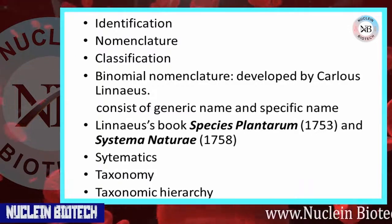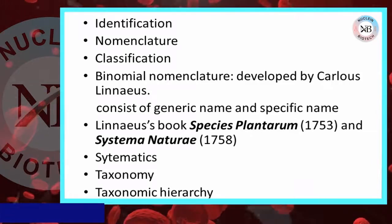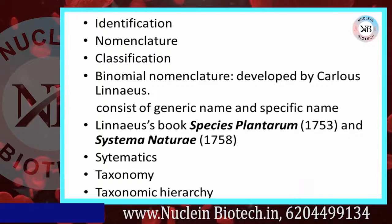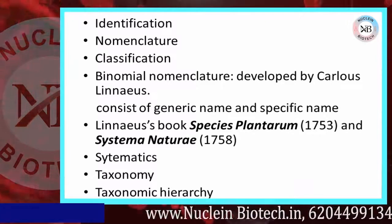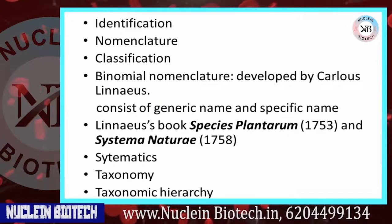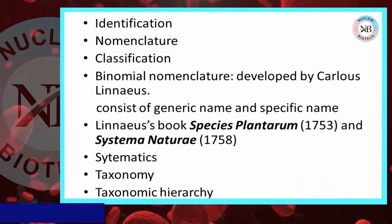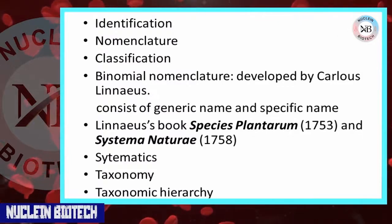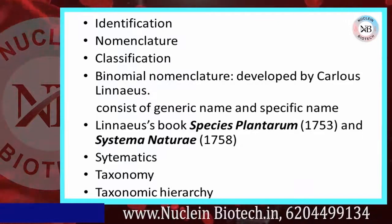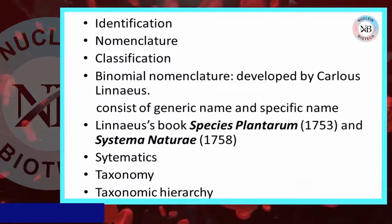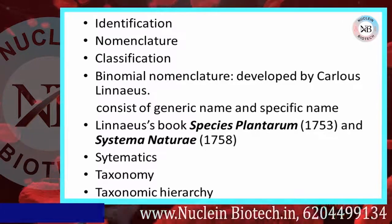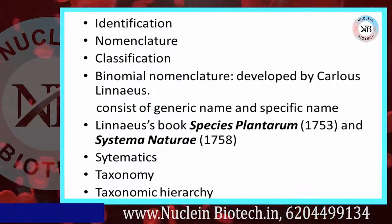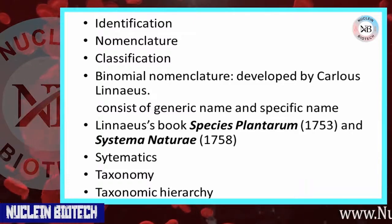Now, classification: it is the process of assigning creatures to specific classes or groups based on defined characters. These groups are known as taxa. Taxonomy is the process of identification, nomenclature, and organization of life forms, considering inner and outer cell structure, biological data, and developmental processes.